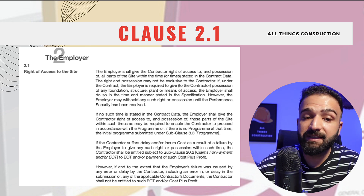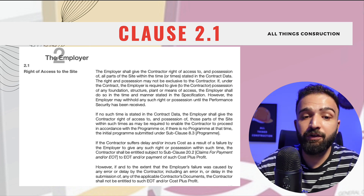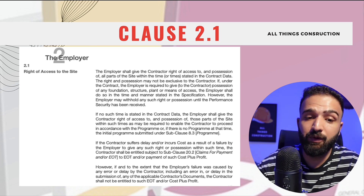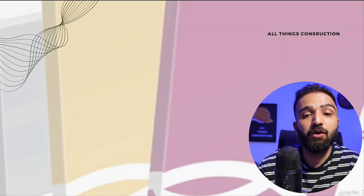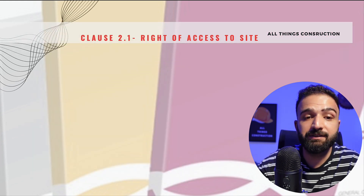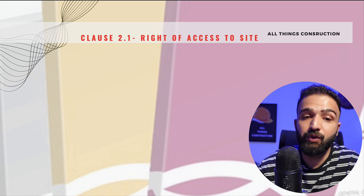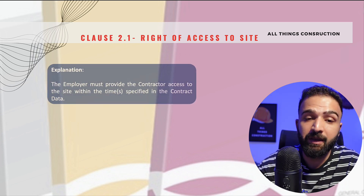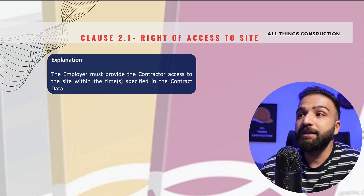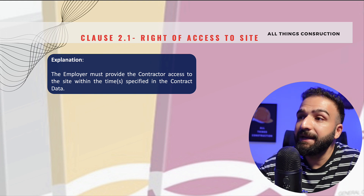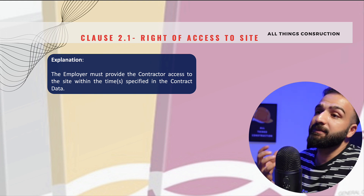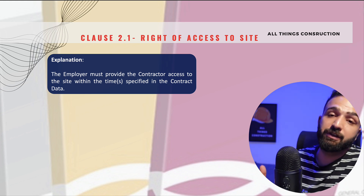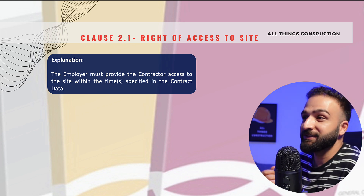I will not read this out loud — if you want to read it, I will leave a link to download the PPT in the comment section. This clause is titled the Right of Access to Site. Basically, what this clause mandates is that the employer needs to provide us, the contractor, with access and possession of the site, because we need the site to execute the works.